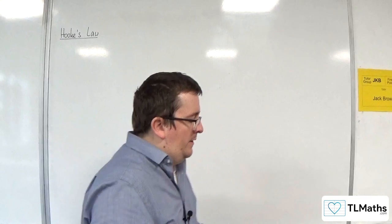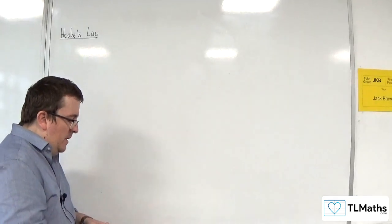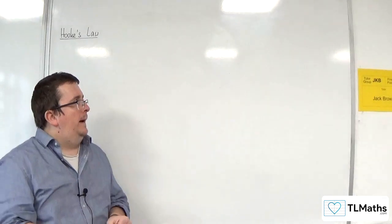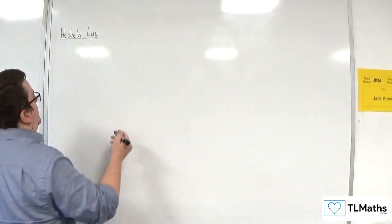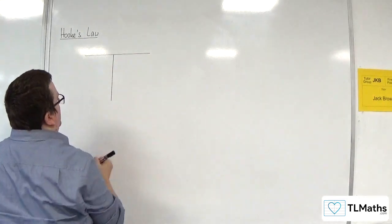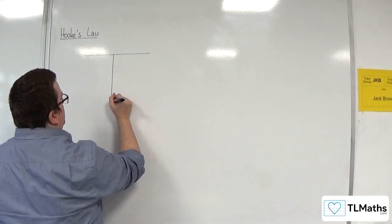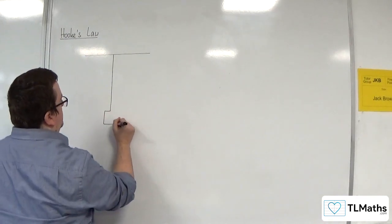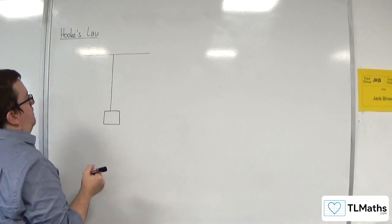OK, so the idea is that this could be an elasticated string or it could be a spring where you've got, let's say it's attached to a weight, OK, for example. So this string is attached to a weight at the end. Let's just put that on there.